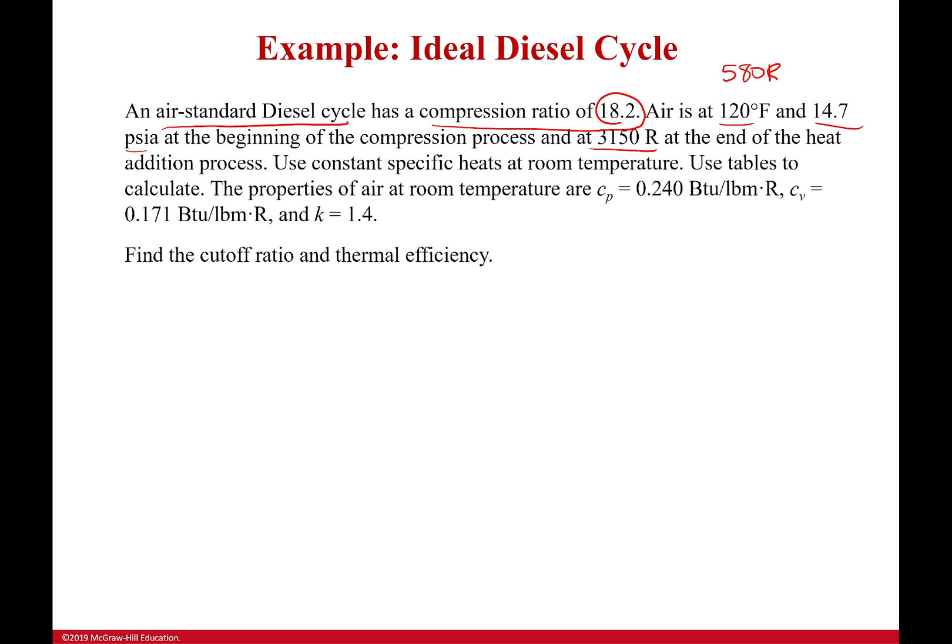We're going to use constant specific heats at room temperature to calculate things, which means no tables whatsoever. It says use tables to calculate, but we actually don't need tables because it's constant specific heats. If it didn't give it to us, we would have to use the tables to get our specific heat for constant pressure, constant volume, and our ratios. But that's given in the problem statement, so we didn't actually have to go to the tables at all.